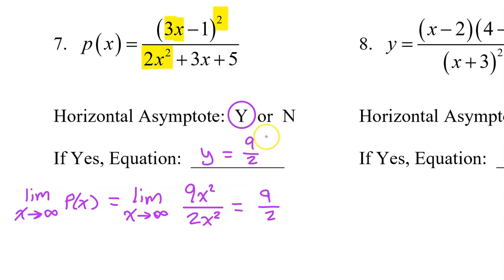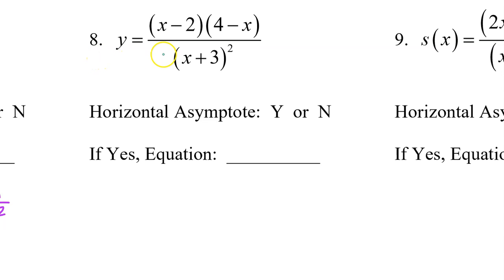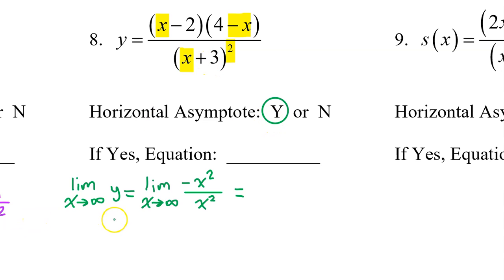When the degrees are equal, we know there will be a horizontal asymptote. Looking at number 8, you should be able to tell at a glance that yes, there will be a horizontal asymptote. Because we can see that the degree of the numerator is 2 — it's the x times x — and the degree of the denominator is also 2, x squared. When the degrees are equal, there is a horizontal asymptote. We can find that by considering the right-end behavior. The x squared will cancel out and leave us with a limit of negative 1. So the horizontal asymptote is y equals negative 1.